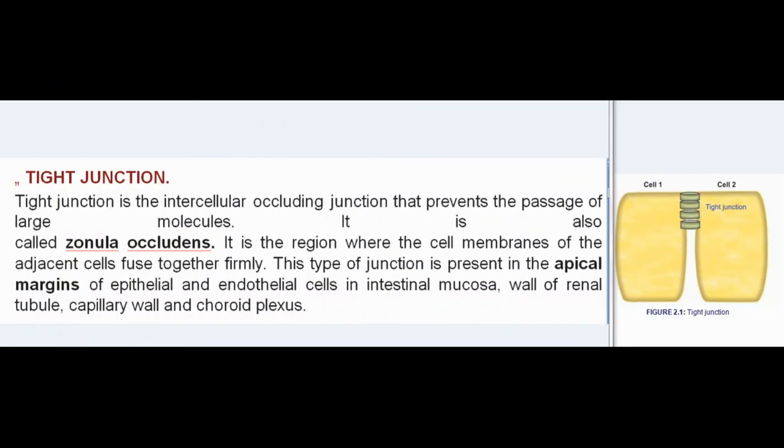Tight junction is the intercellular occluding junction that prevents the passage of large molecules. It is also called zonula occludens. It is the region where the cell membranes of adjacent cells fuse together firmly. This type of junction is present in the apical margins of epithelial and endothelial cells in intestinal mucosa, wall of renal tubule, capillary wall, and choroid plexus.